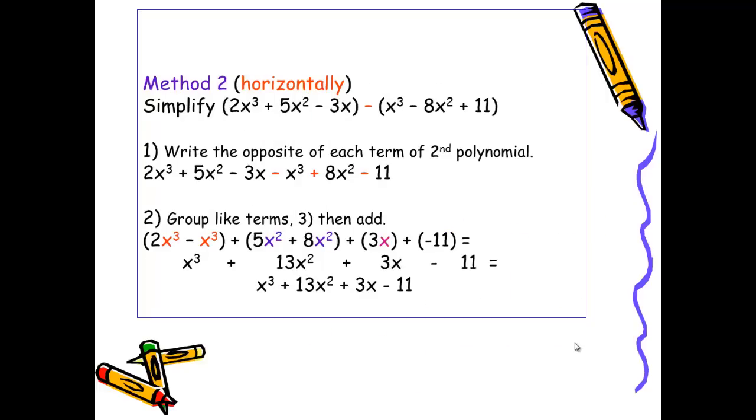Subtracting can also be done horizontally. Using the same example, I would write the opposite of each term of the second polynomial. So I've changed this to be -x³ + 8x² - 11. I then group the like terms and then I combine. So I would again get x³ + 13x² + 3x - 11.